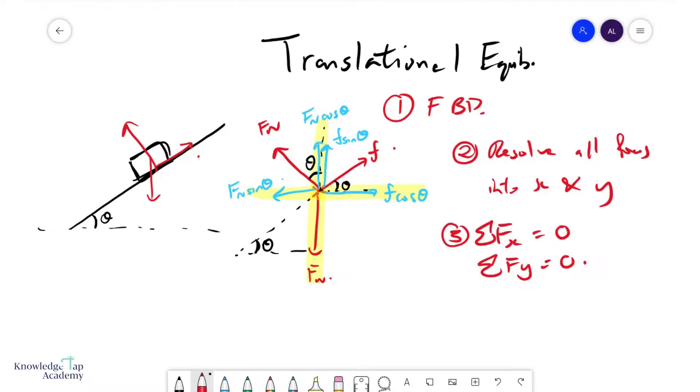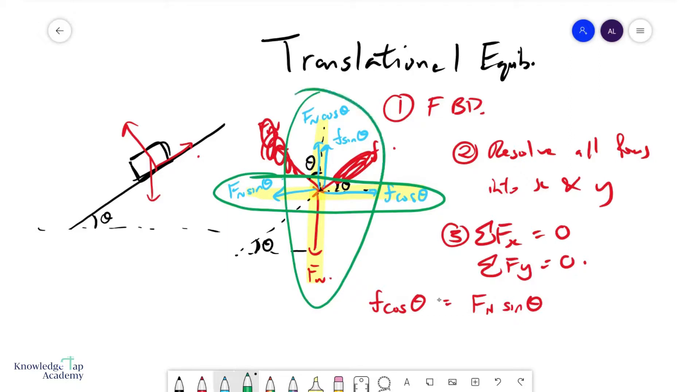Once I've resolved them, we don't have to consider these two anymore. I can now say that F cosine theta must equal in magnitude Fn sine theta. That's working out the horizontal forces. Now, with the vertical forces, we can say Fn cosine theta plus F sine theta must equal the weight.